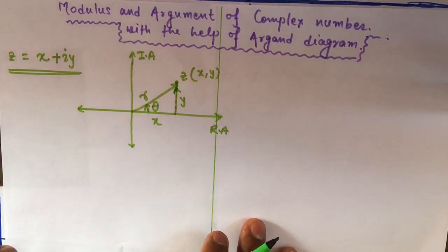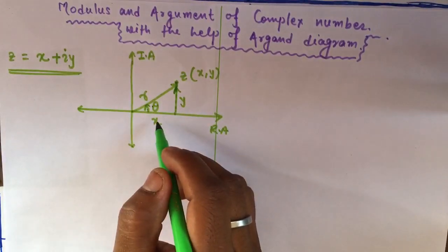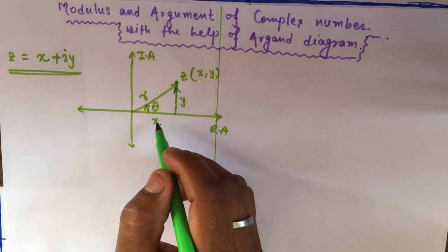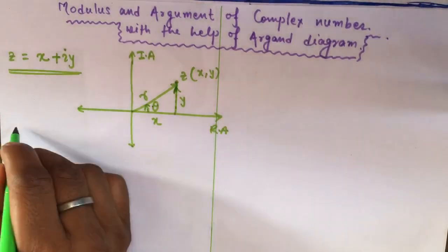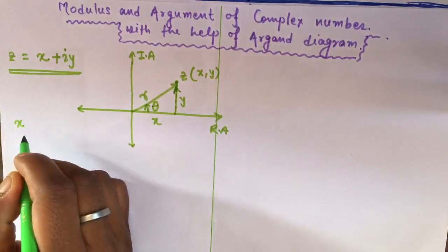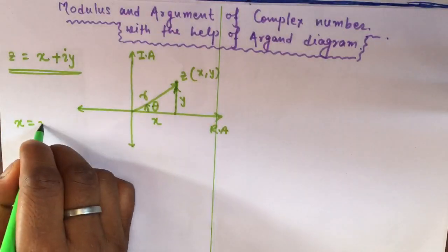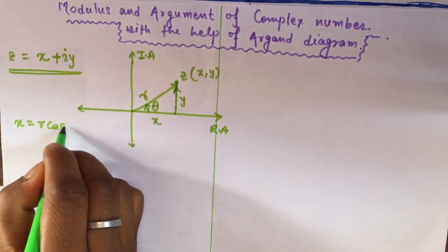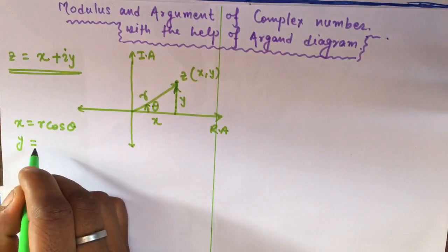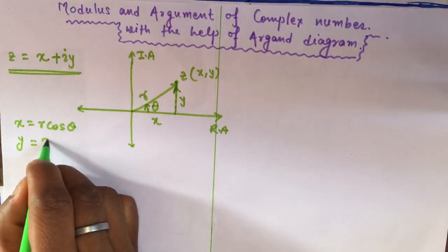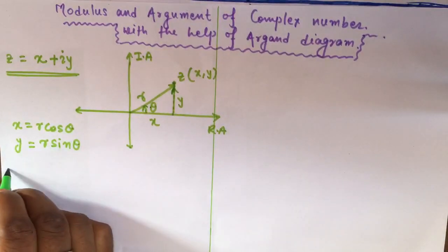With the help of the Argand diagram, we are going to see modulus and argument. If we represent x, the real part, in terms of r, we write x = r·cosθ, and similarly y in terms of r, we write y = r·sinθ.